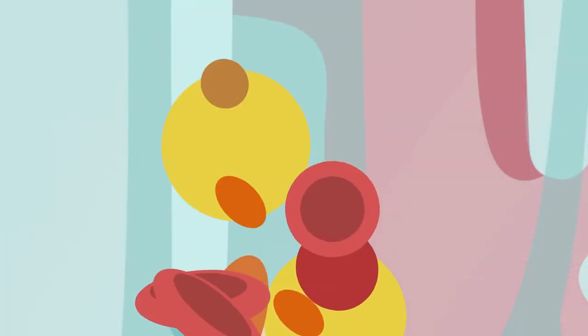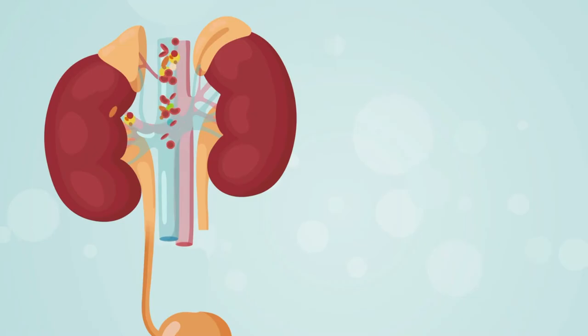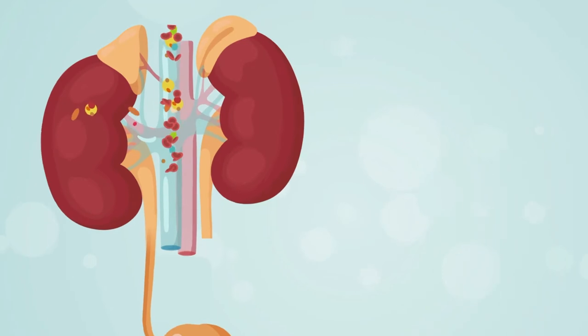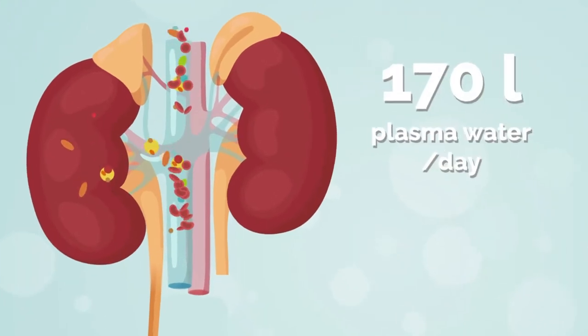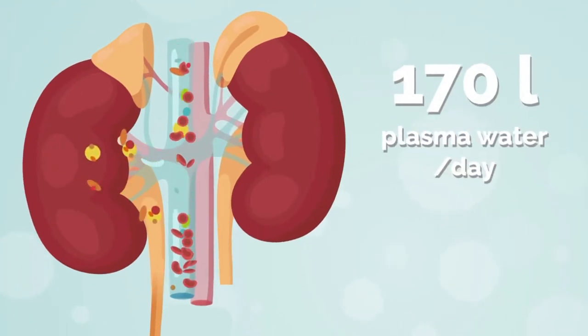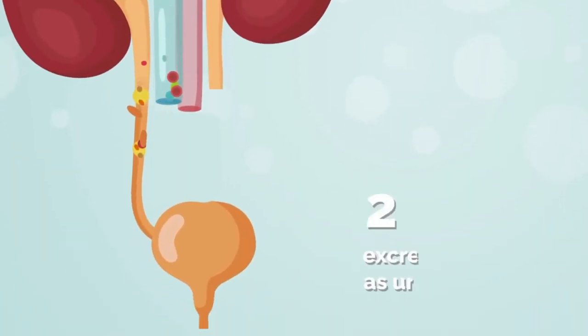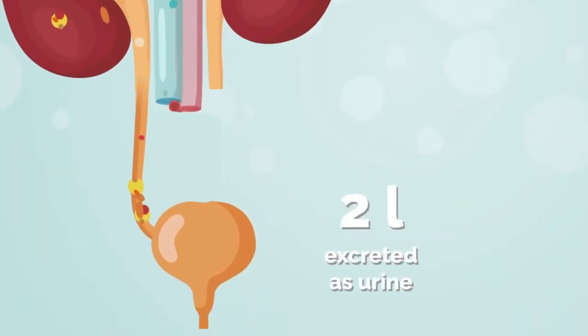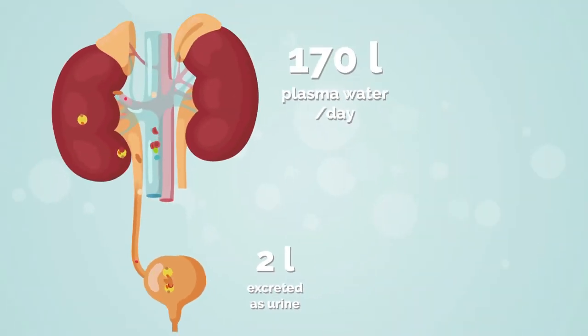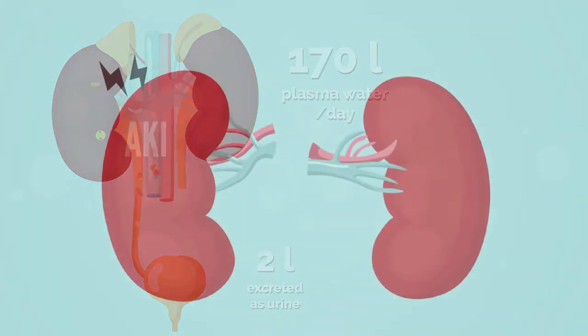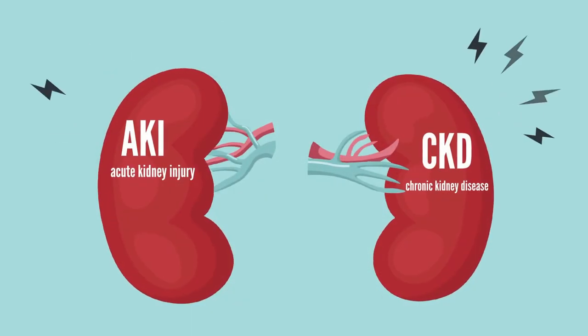Healthy kidneys filter up to 170 litres of plasma water, of which only 2 litres are excreted as urine containing waste products. If kidney function is lost,